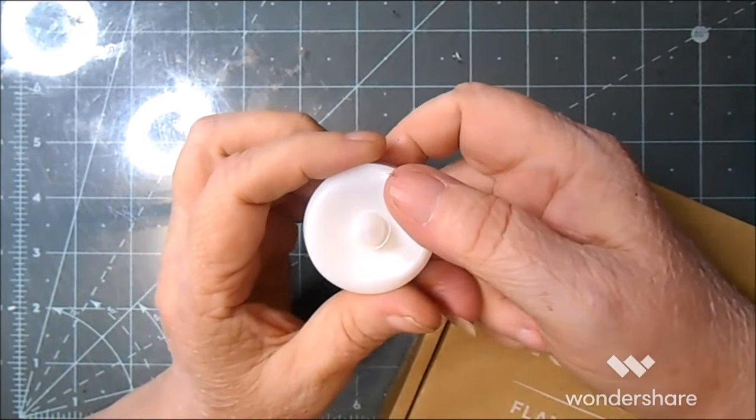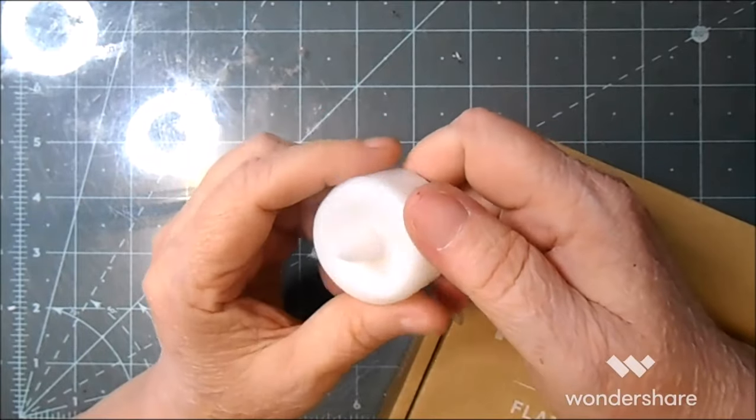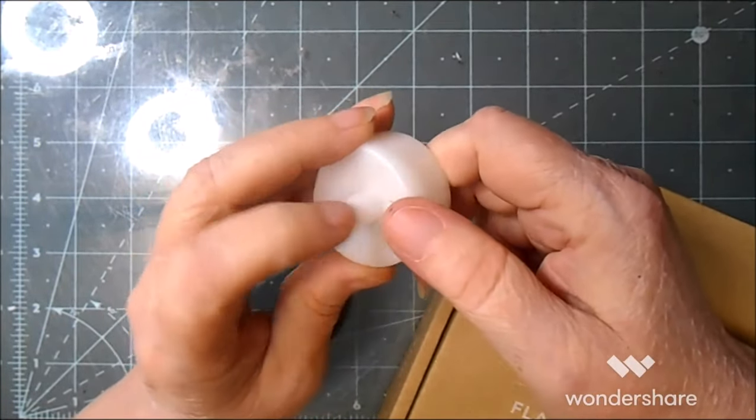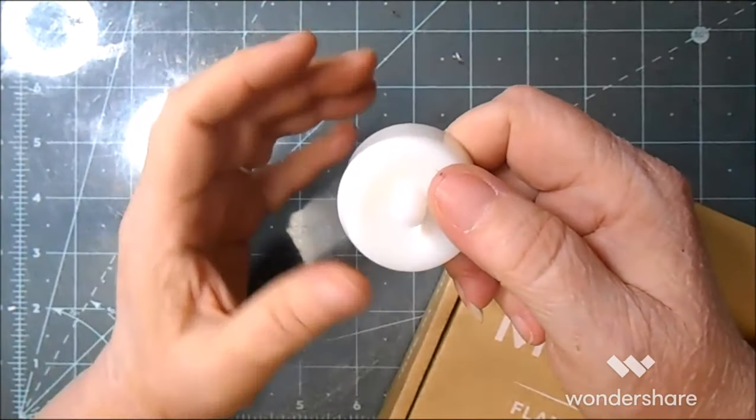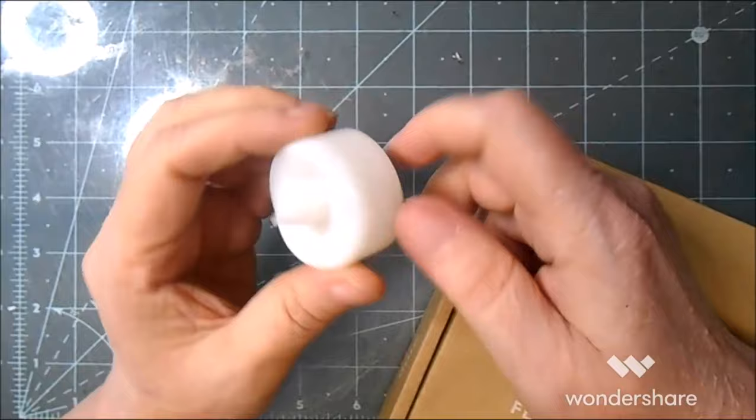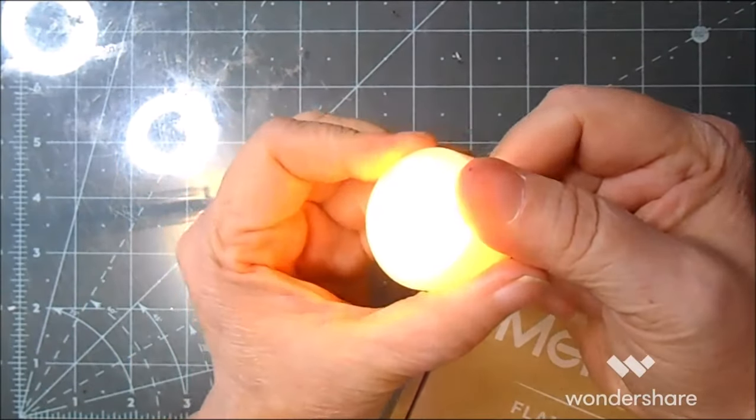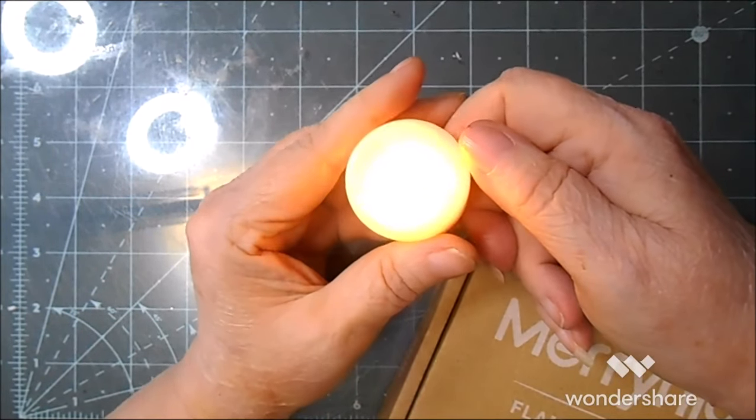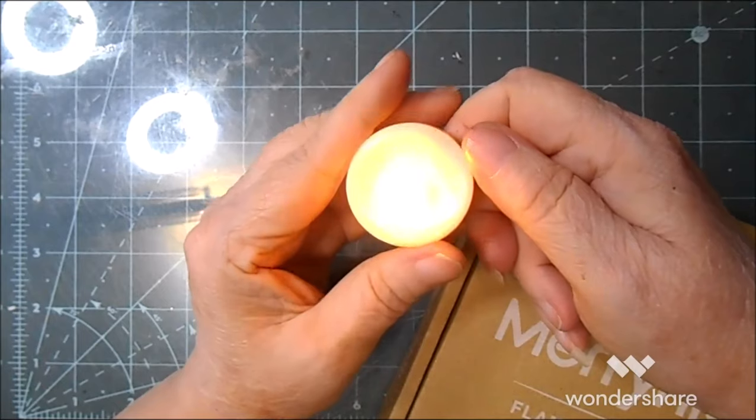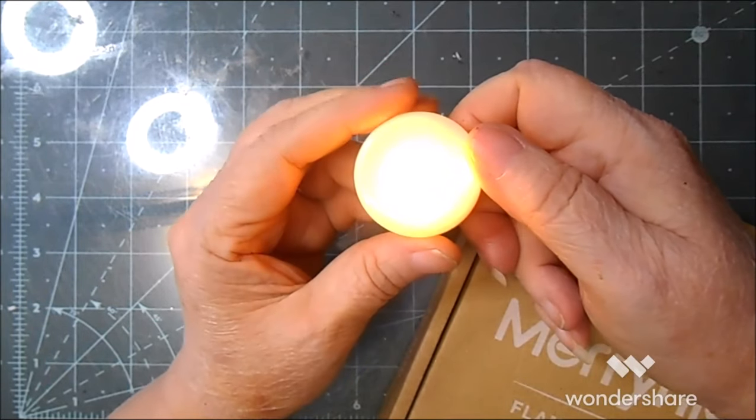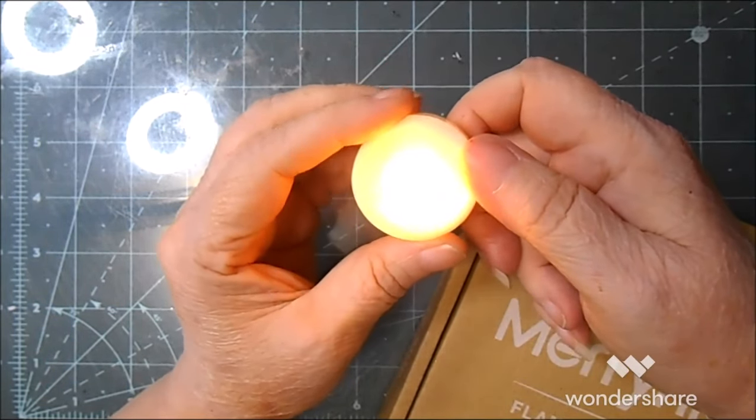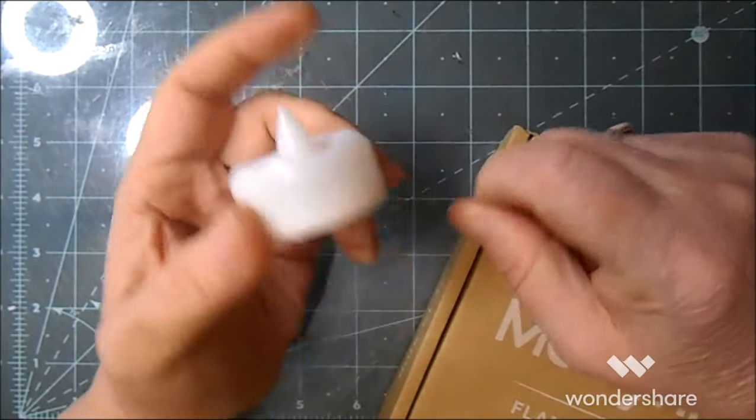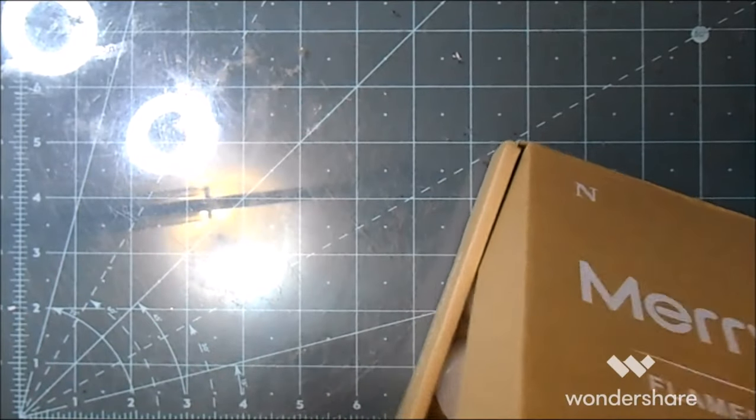My biggest complaint in the past about tea lights you get at Dollar Tree and places like that is they're not bright enough. These suckers are bright. I love them, I love the flicker. I love that they're just white, not multicolored, but you can get the multicolored as another option.